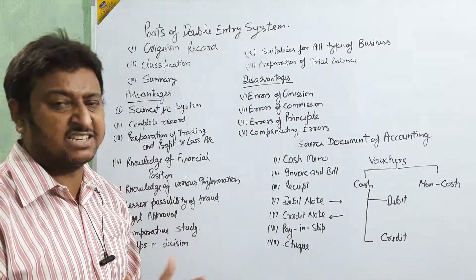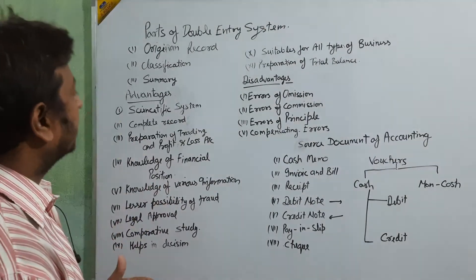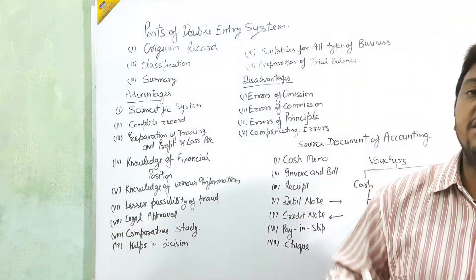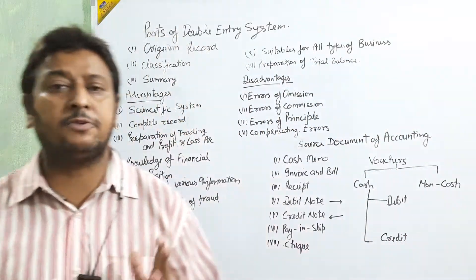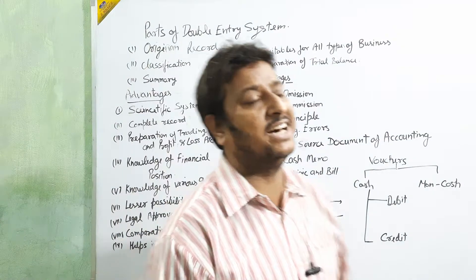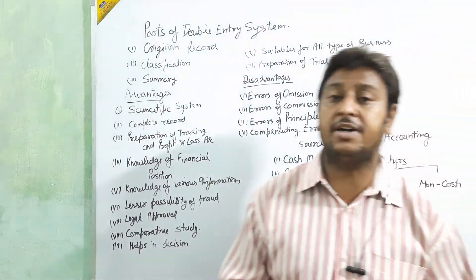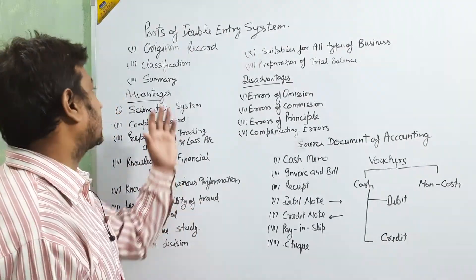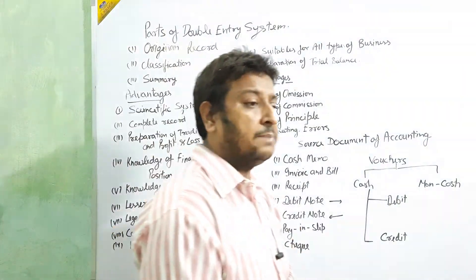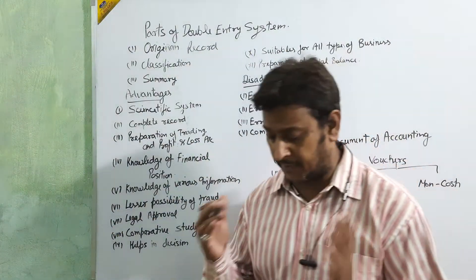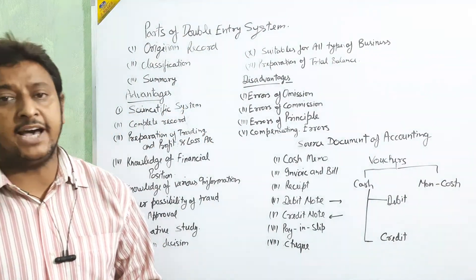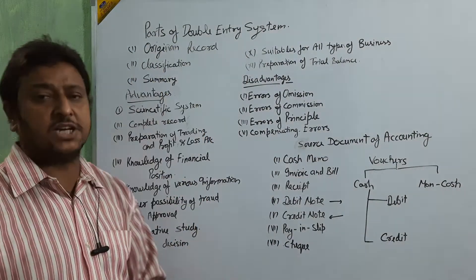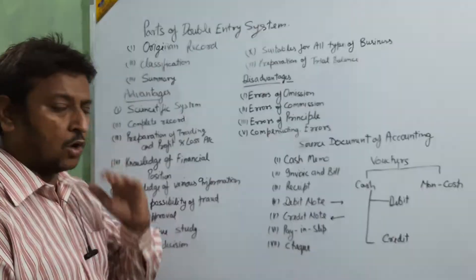Transactions are presented in the form of a journal. Next is classification — after entering transactions in different books, we open the ledger for different accounts. One type of account is taken in one head, another type in another head, and that is called classification of accounts.